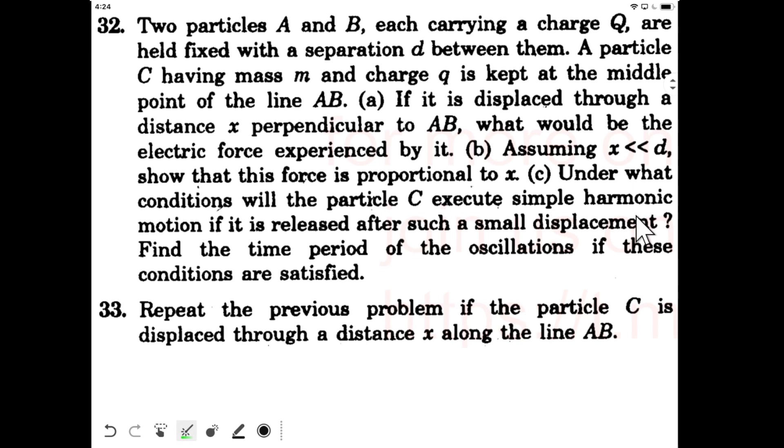Question number 32 says that two particles A and B, each carrying a charge Q, are held fixed with a separation d between them. A particle C having mass m and charge q is kept at the middle point of the line AB.